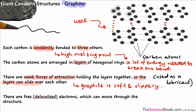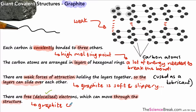The last point about graphite is that there are free electrons — also called delocalized electrons — which can move through the structure. That means graphite can actually conduct electricity. It's pretty much the only solid non-metal that can conduct electricity.